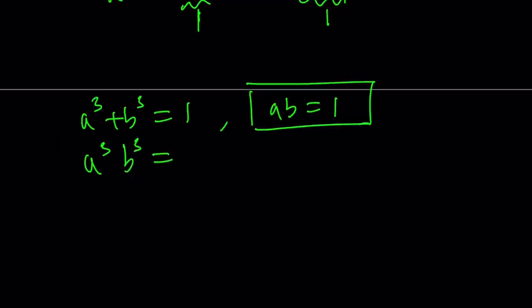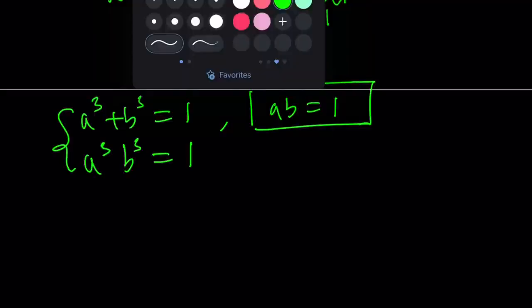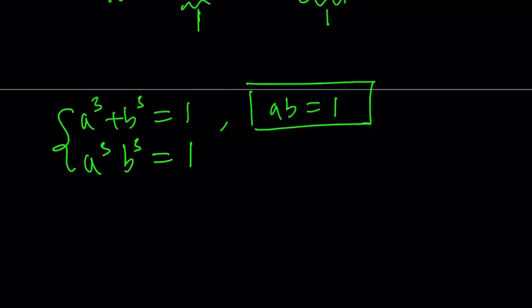Now we got a good system, and this is actually quadratic. Why? I'll show you. We can go ahead and isolate one of the variables. Let's go ahead and isolate b³. We can write b³ as 1 - a³, and then substitute here.